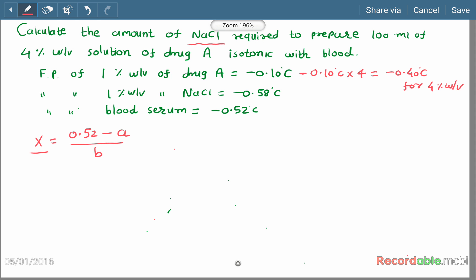Over here, 0.52 minus a. We will take 0.40°C as a because the solution is given for 4% and the value is given for 1%, so we have to convert this value for 4%.